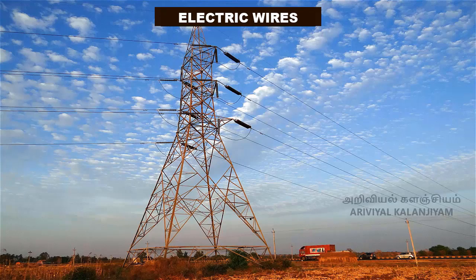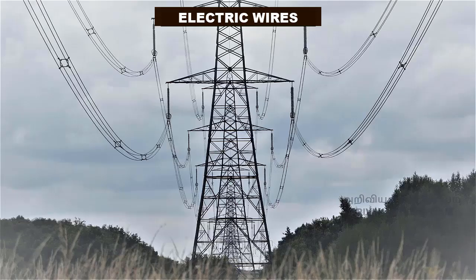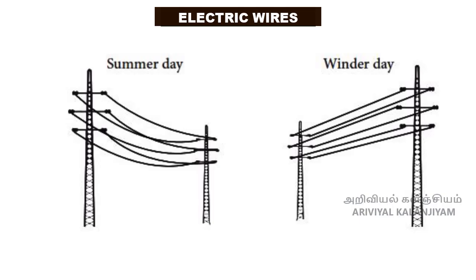Electric wires. Electric wires between electric posts contract on cold days and sag on summer days. To solve this problem, we leave the wires slack so that they are free to change length.